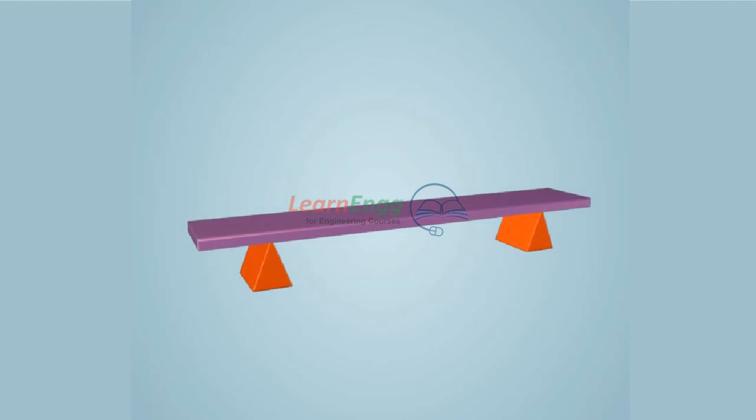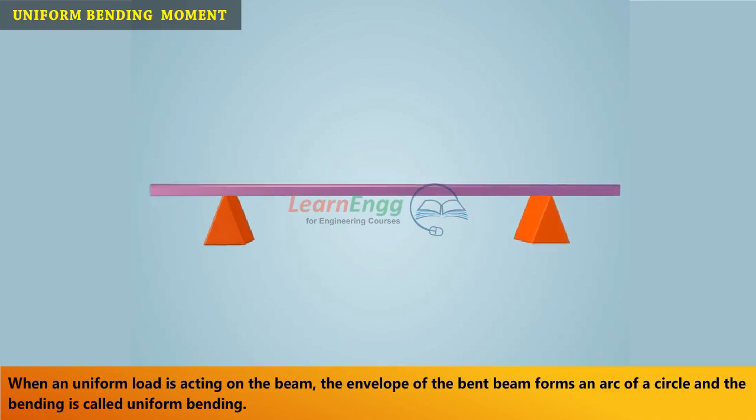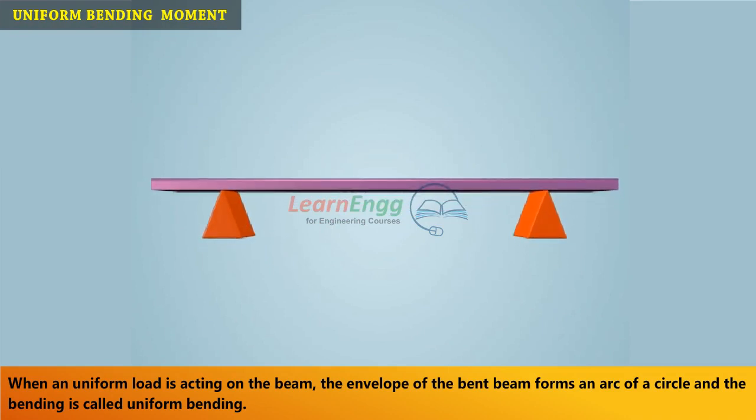Now we are going to see about the definition of uniform bending moments. When a uniform load is acting on the beam, the envelope of the bent beam forms an arc of a circle and the bending is called uniform bending.